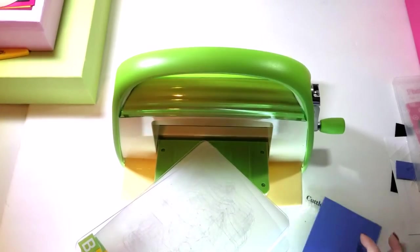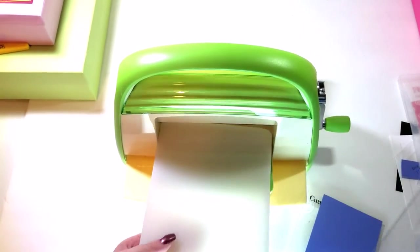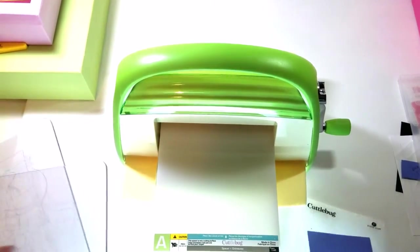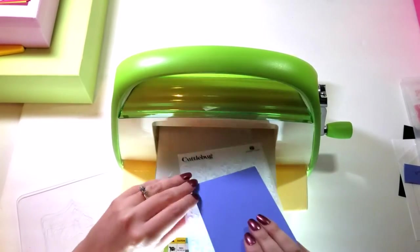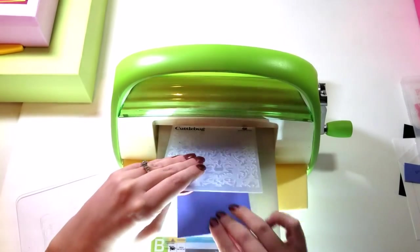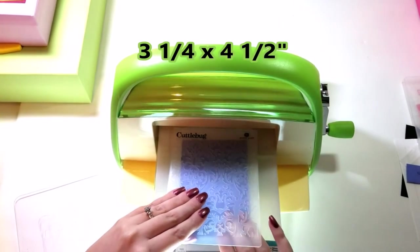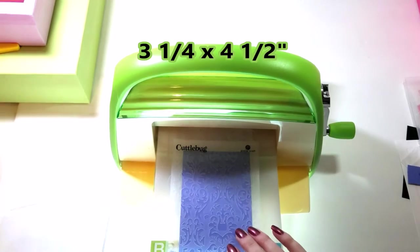Today we are doing a vinyl record card for music lovers. Now we're going to begin by using the Cuddlebug, or you can use a Big Shot, and I'm going to add a little bit of embossing. This is just dry embossing with an embossing folder, and this will add a little bit of texture to the background.